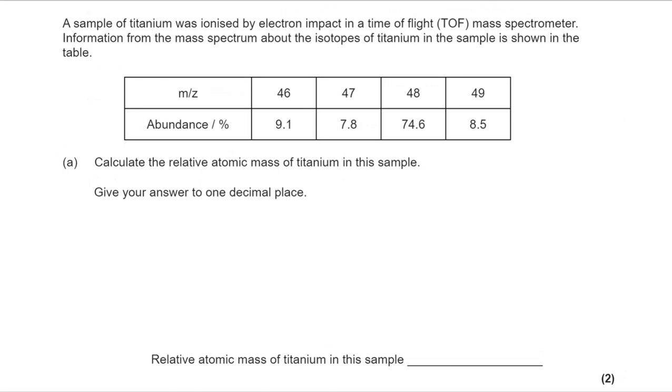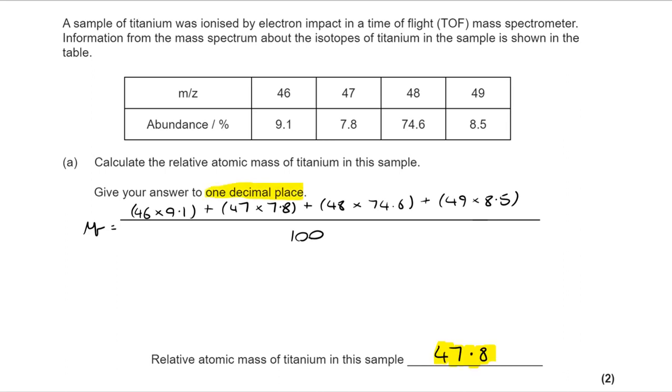So for A, relatively straightforward mass spec calculation. We've got the m/z values, we've got the abundances, so we put those in. We're dividing by 100 because we're dealing with percentages. Always double check that. Sometimes it's not percentages and you'll divide by a different number. Once you've done that, you get to a relative atomic mass of 47.8.